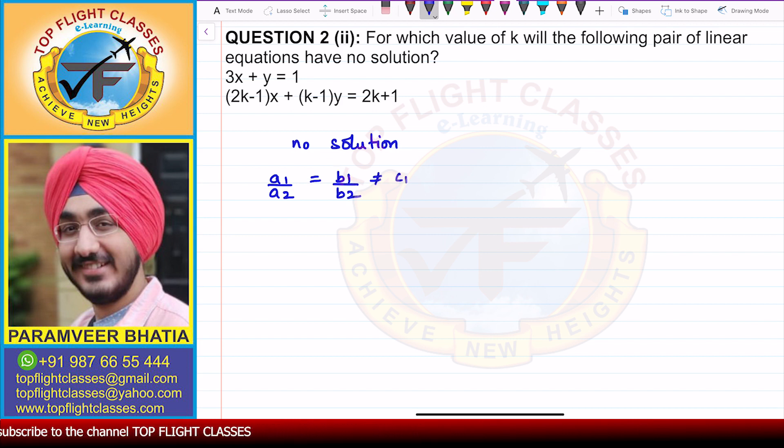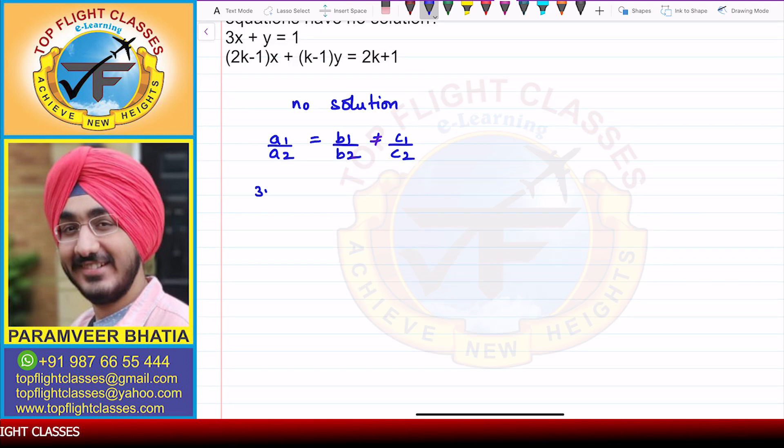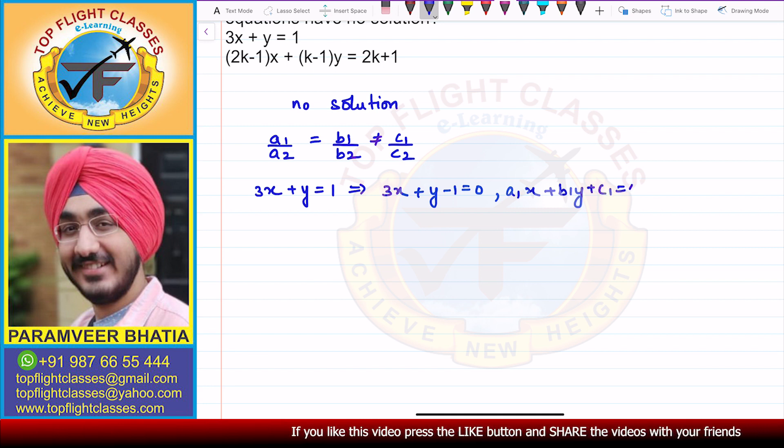Now, on seeing the equations, the first equation is 3x plus y is equal to 1. So this can be written as 3x plus y minus 1 equal to 0. On comparing it with a1x plus b1y plus c1 equal to 0, what I will get is that a1 is equal to 3, b1 is equal to 1, and c1 is equal to minus 1.